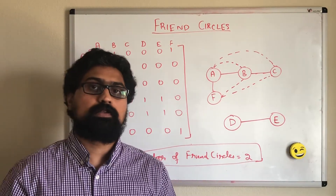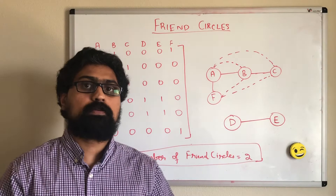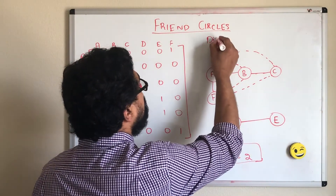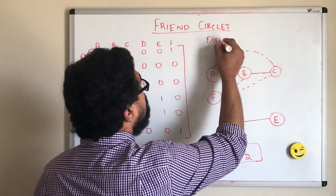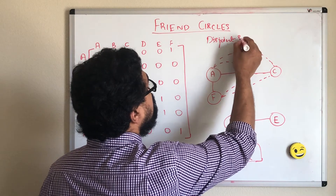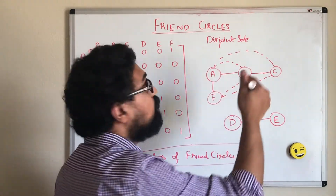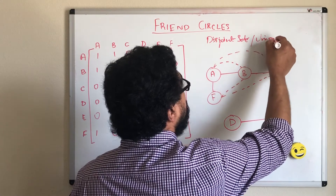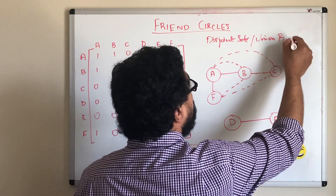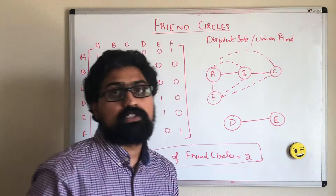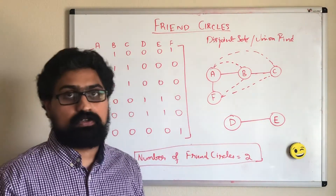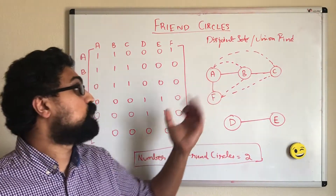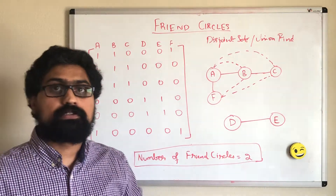So how can we solve this problem? We can solve this using a data structure called disjoint sets, also called the union-find data structure. First let us try to understand what disjoint set data structure is and what operations we can do on disjoint sets, and then we will solve this problem.